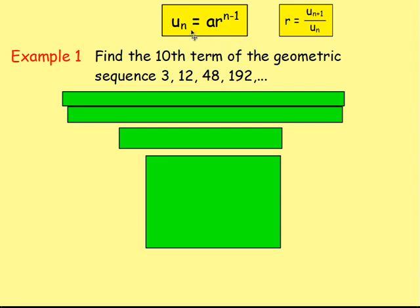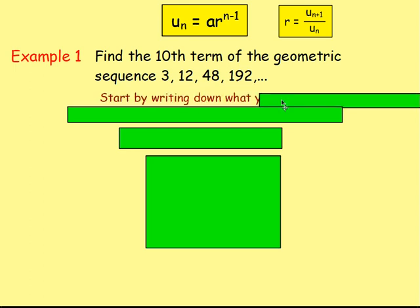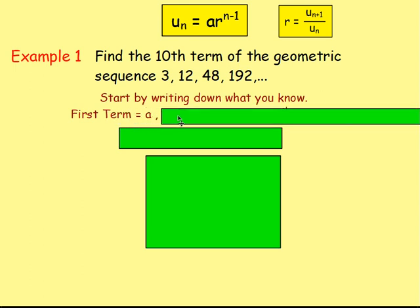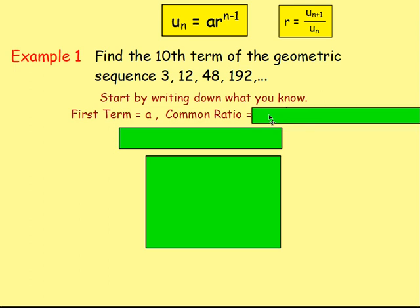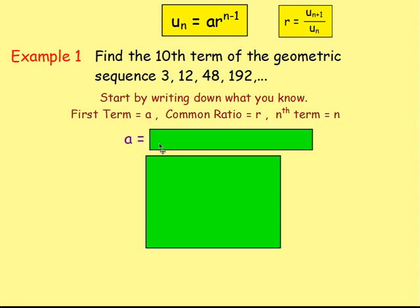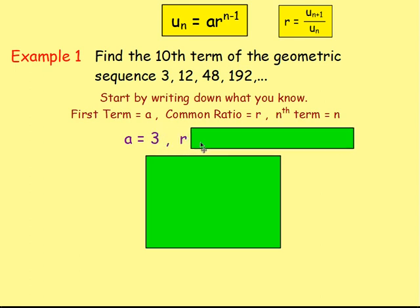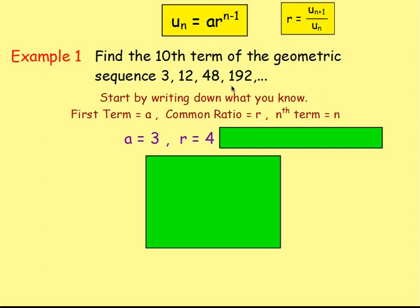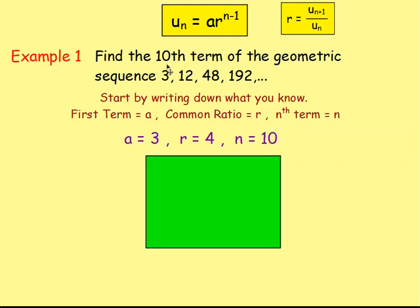Let's try some examples. Using u(n) equals a times r to the n minus one, let's find the tenth term of the geometric sequence 3, 12, 48, 192. Just start by writing down what you know. The first term a equals 3. Your common ratio: do 12 divided by 3, which gives you 4 — you can easily see you're multiplying by 4 every time. And n is going to be 10, because we're asked to work out the tenth term.